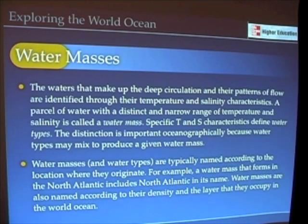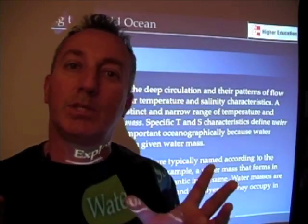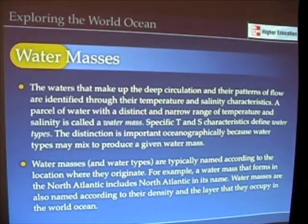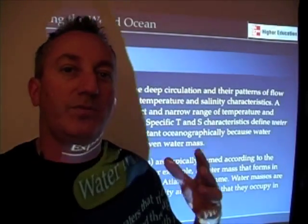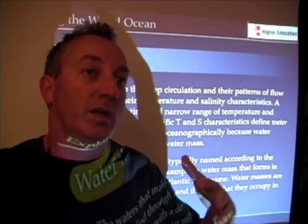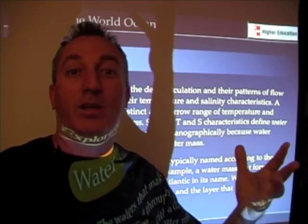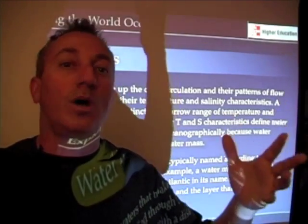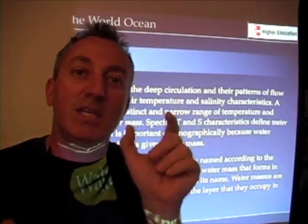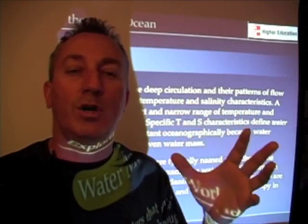The waters that make up the deep circulation are identified by a characteristic temperature and salinity. A parcel of water — there's no real firm and hard definition, but probably something larger than a swimming pool, maybe on the order of a large lake like one of the Great Lakes or even larger — water that has a fairly narrow range of temperature and a fairly narrow range of salinity is called a water mass.